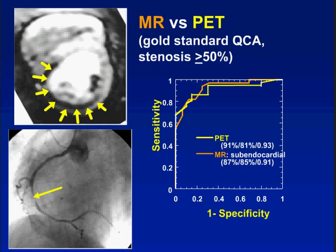Compared to PET, which is considered the gold standard for viability and also outstanding for perfusion, comparing MR versus PET using coronary angiography as the gold standard shows that MR and PET perform in a similar fashion on the ROC curve. Another example of MR perfusion shows an advantage of MR over PET: we can see the extent of involvement. There is a perfusion defect that is not transmural, corresponding to an angiogram showing stenosis.